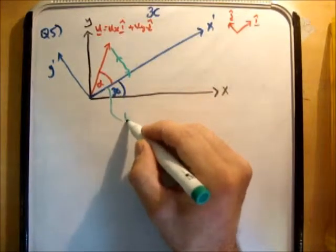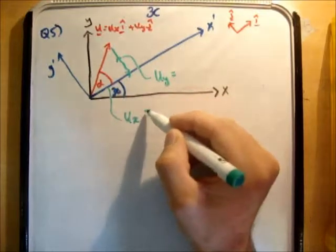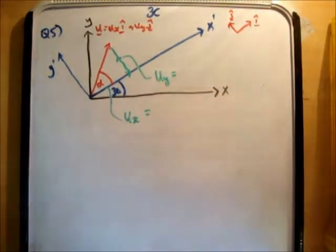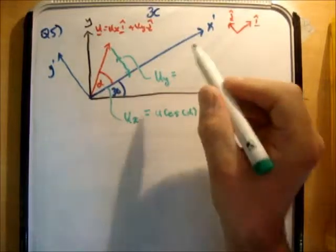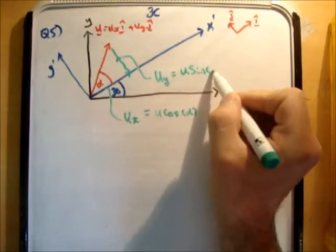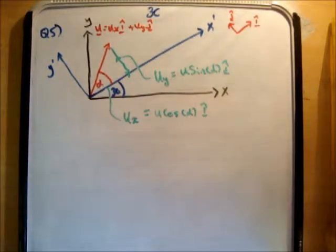So this vector here is u sub x. This vector here is u sub y. I'm going to leave it at alpha for the moment. So this is going to be u cosine of alpha. This is going to be u sine of alpha. This will be j hat and this will be i hat. And that's the general case.